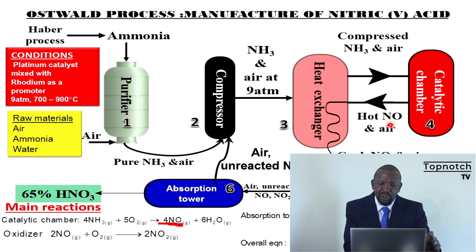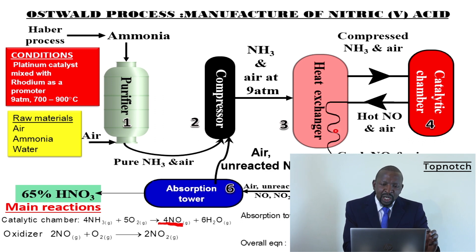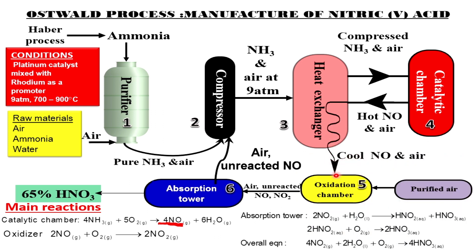Once you have produced the nitrogen monoxide (NO), it is very hot and is taken back to the heat exchanger for cooling. The heat exchanger preheats the incoming gases and also cools the product. The cooled nitrogen monoxide is then taken to the oxidation chamber, where it reacts with oxygen to form nitrogen dioxide (NO₂) — it is oxidized. We also add more purified air here. Unreacted nitrogen monoxide and air are recycled back to the compressor.